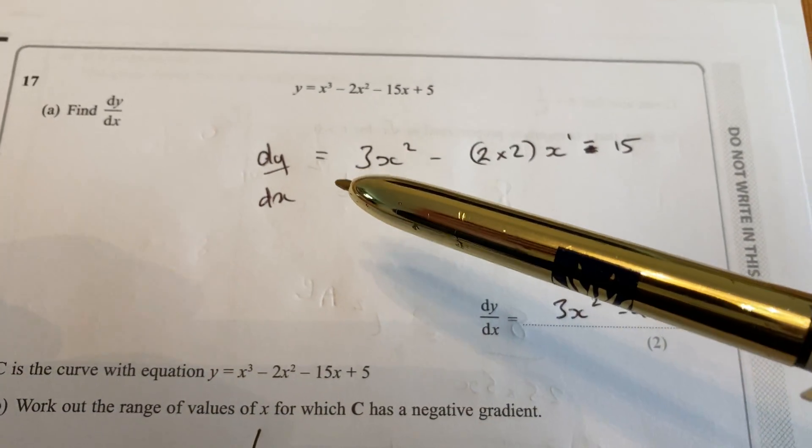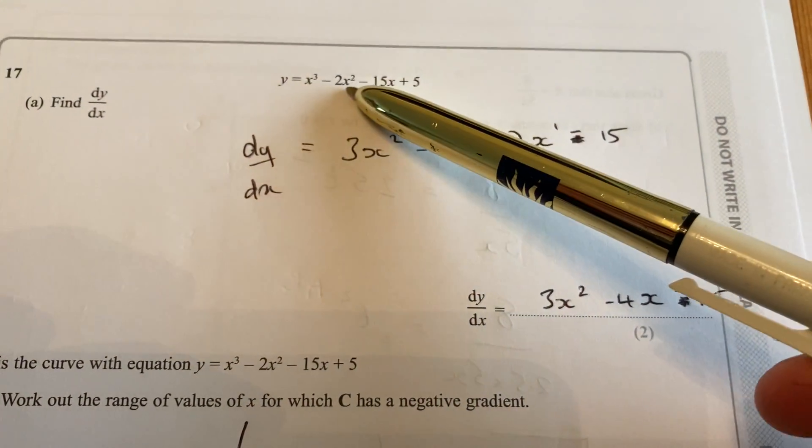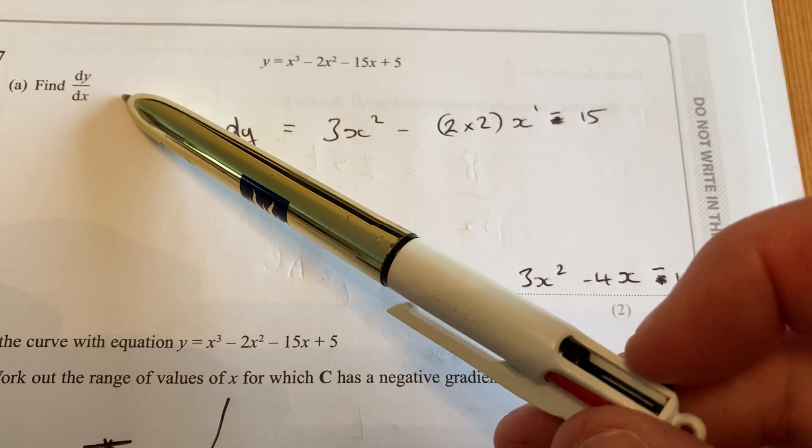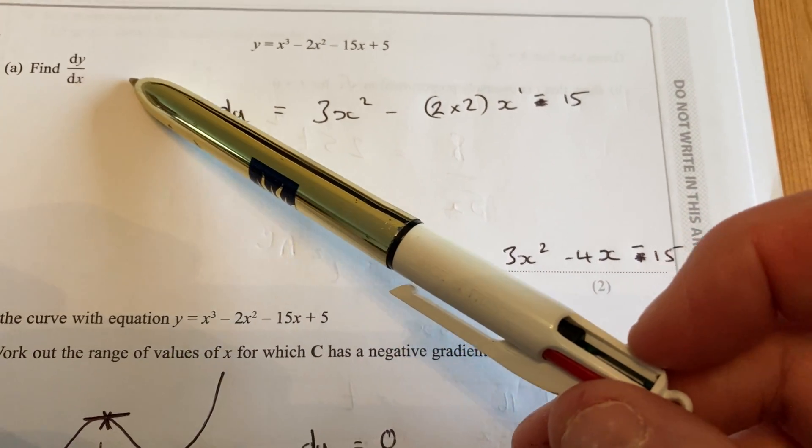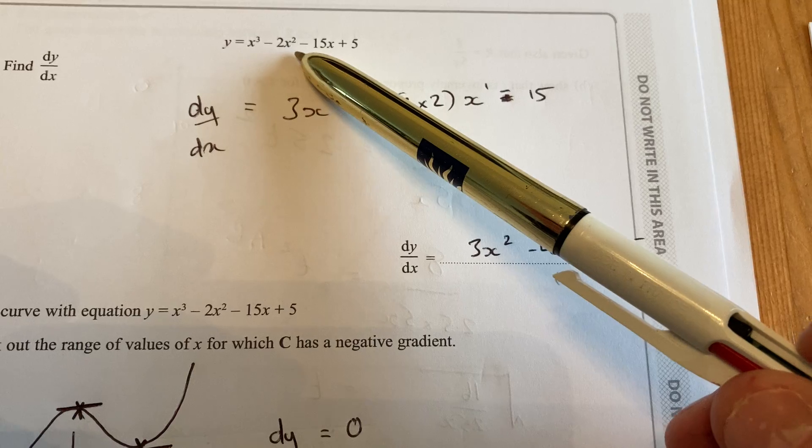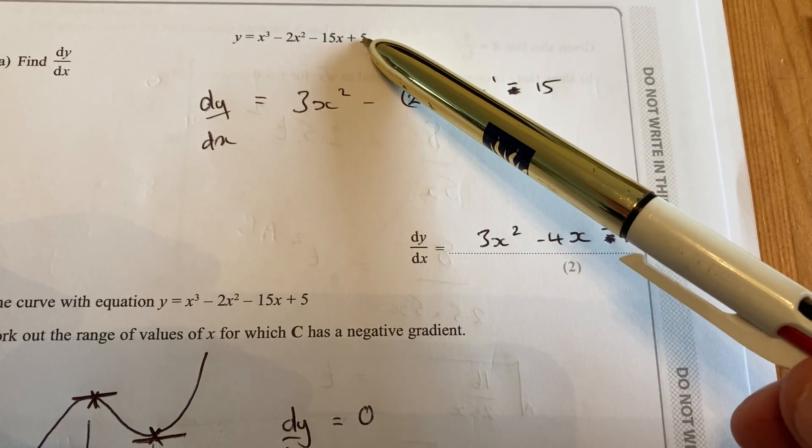OK, question 17. We haven't fully finished differentiation, but you know what dy by dx means and how to calculate it. So x cubed minus 2x squared minus 15x plus 5.